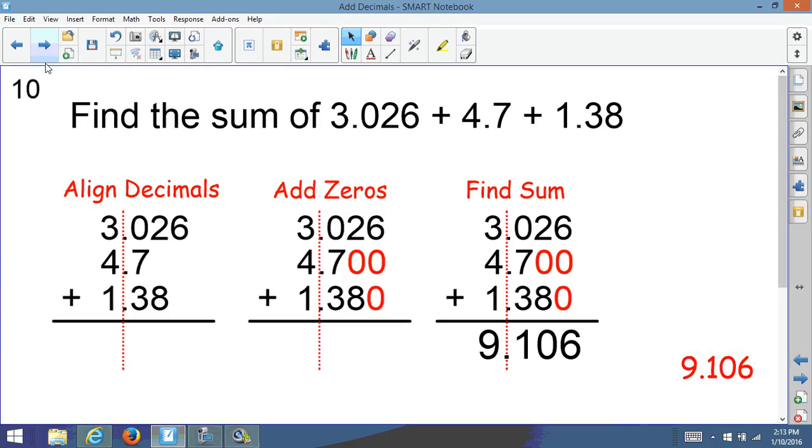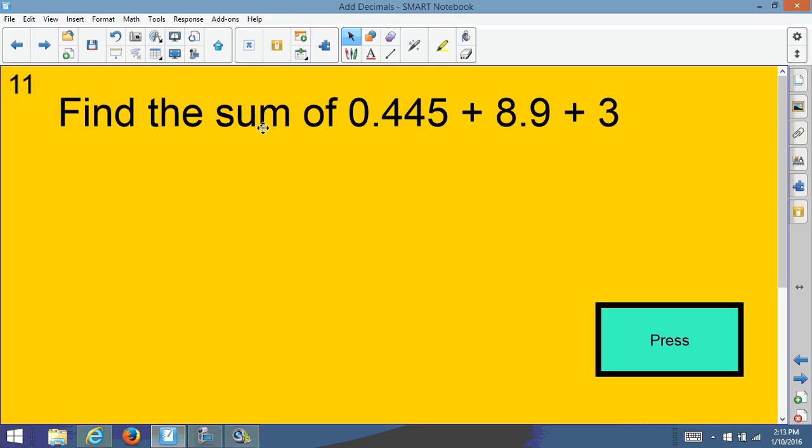So here's a question for you to try. Find the sum of 0.445 plus 8.9 plus 3. And I notice 3 is a whole number, so it doesn't have a decimal point. So remember, you have to add a decimal point at the end. So good luck. Try that one.